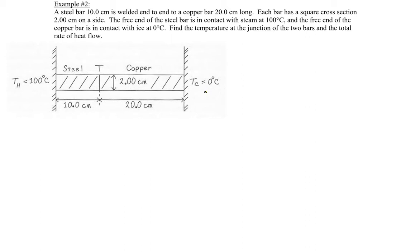We're told that this bar is a rectangular, or actually a square cross section to it, with two centimeters on each side. So the area, which is not listed here, is two centimeters by two centimeters.